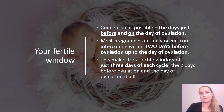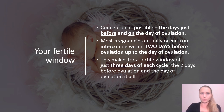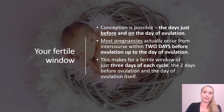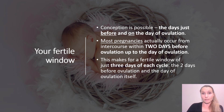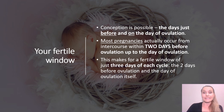The days when conception is possible are the days just before and on the day that you ovulate. Based on the maximum lifespan of human sperm and egg — sperm live for up to five days and your egg for up to one day or 24 hours — this fertile window is therefore at most six days in your cycle.